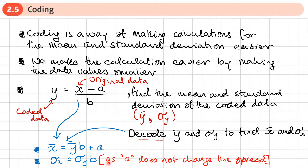Notice we just multiply by b — there is no need to add a, because a does not change the spread of the data. If you have numbers one to ten and numbers 101 to 110, the spread is the same; adding 100 makes no difference. So we only multiply by b for the standard deviation, since adding a doesn't affect spread.